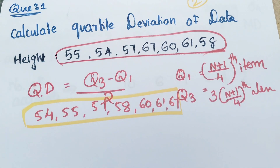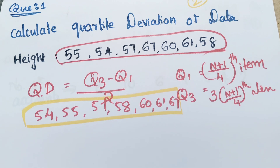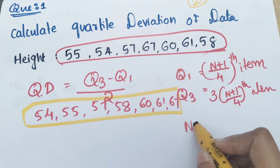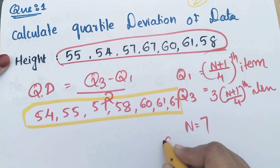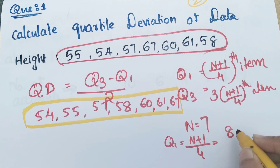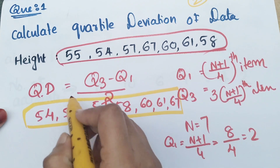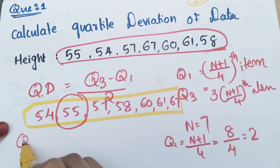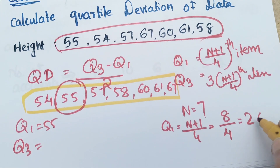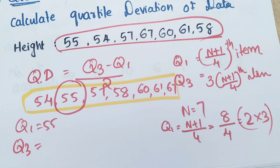Now n plus 1 by 2th item. We count: 1, 2, 3, 4, 5, 6, 7 — n equals 7. Wait, we have to take n. We have to take Q1. Q1 is equal to n plus 1 by 4. That is 8 by 4 equals 2. So Q1 is the 2nd item. Then Q3: 3 into (n+1)/4 equals 3 into 2 equals 6. The 6th item is Q3 equals 61.